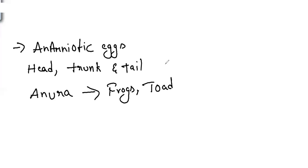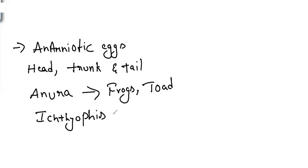The skin of amphibians is very smooth and scaleless — no scales are found, unlike fishes (which have placoid, cycloid, and ctenoid scales) and reptiles (which have hard, cornified scales). A few exceptions exist, such as Ichthyophis, which has dermal scales embedded in the skin. 'Ichthyo' means fish, so it is named for its fish-like appearance with scales.